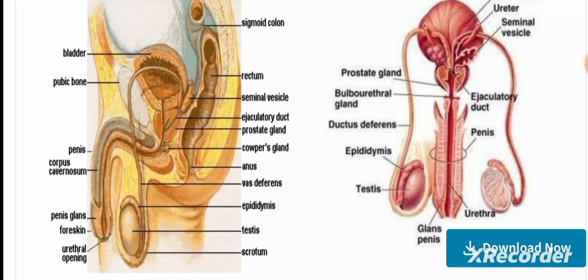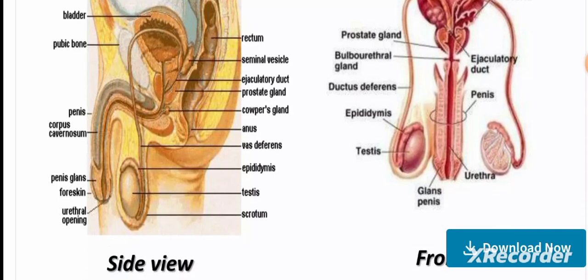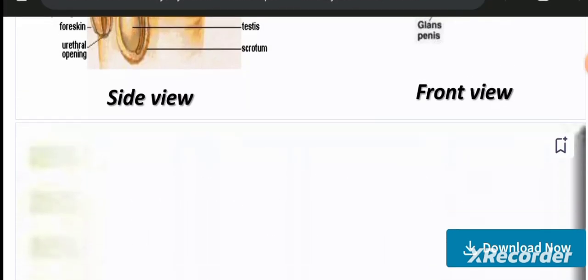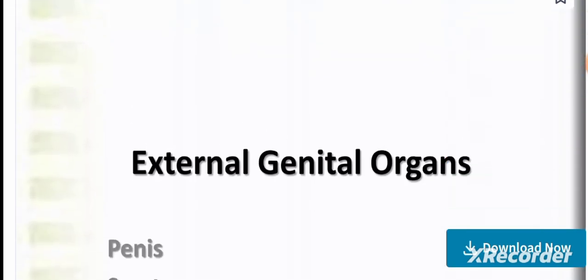Looking at the internal organs, we see the seminal vesicles and ejaculatory ducts. The central canal of the penis is the urethra. Structures visible include the glans penis, testes, epididymis, ductus deferens, bulbourethral gland, and prostate gland. This is the front and side view of the male reproductive organs.